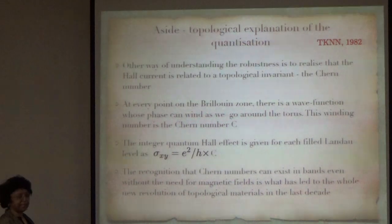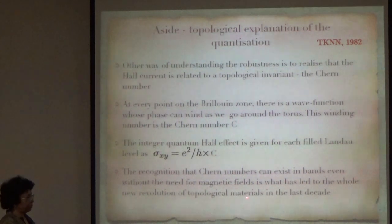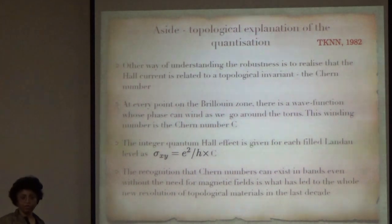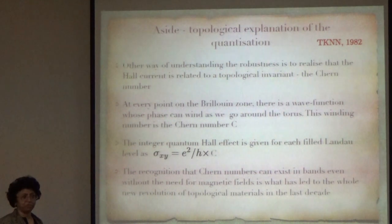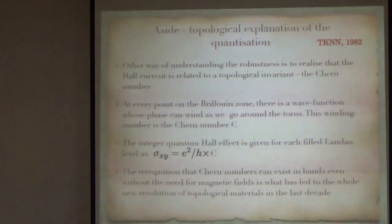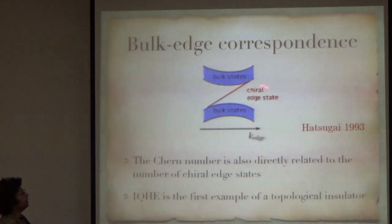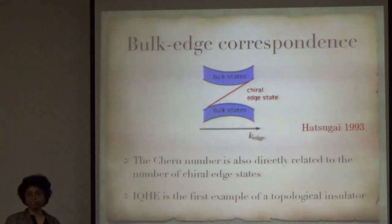The recognition that Chern numbers can exist in bands even without a magnetic field is what has led to this whole new revelation of what are now called topological materials, topological band insulators, and so on, in the last decade. This may be familiar to everyone because in the last few years there's been a lot of work done on topological materials. But that's not the topic of this talk. The bulk edge correspondence can be understood because the Chern number is also directly related to the number of chiral edge states. The integer quantum Hall effect is now thought of as the first topological insulator.